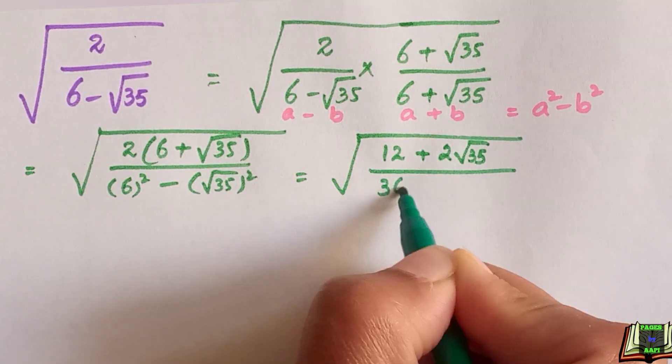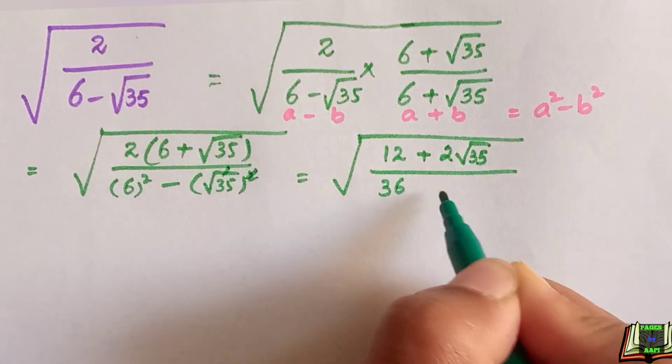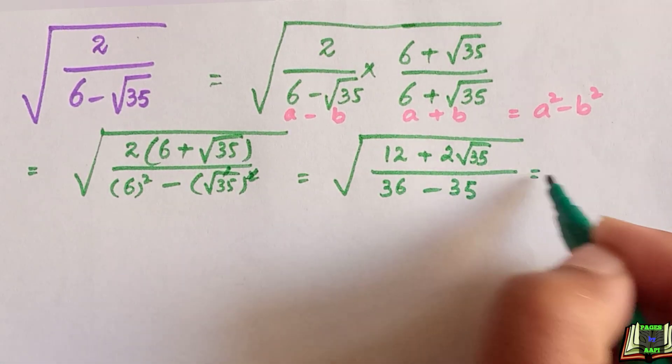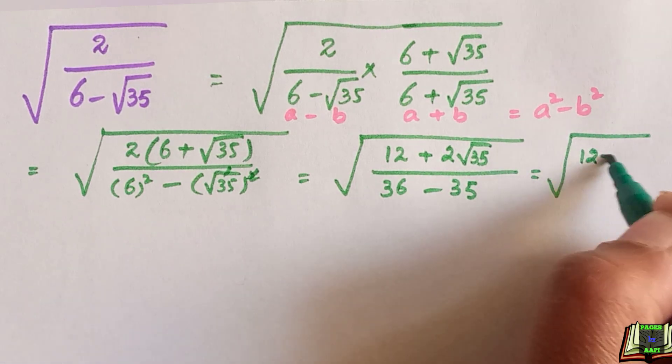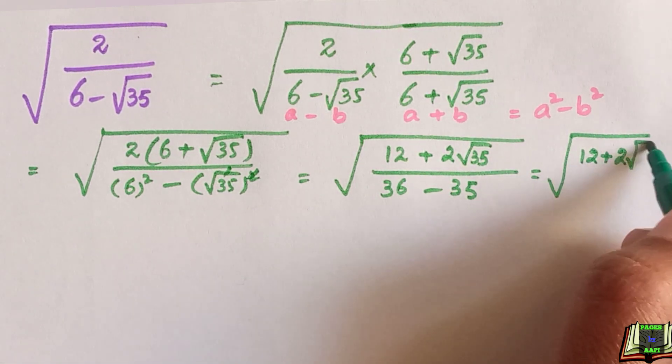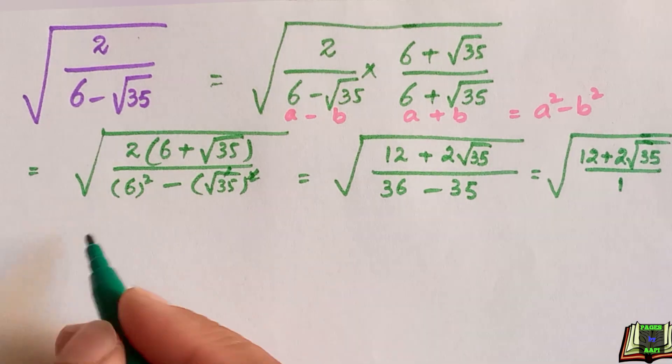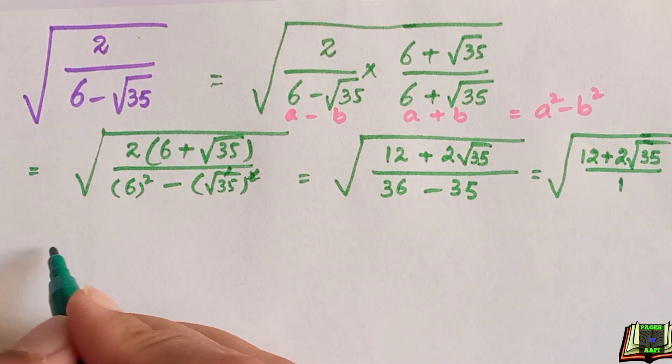6 square means 36, and this square and root cancel out we have 35 only. Which is equal to square root of 12 plus 2 root 35 divided by 36 minus 35 is equal to 1.